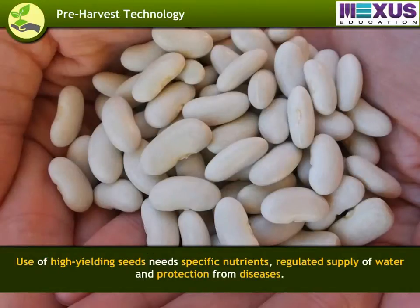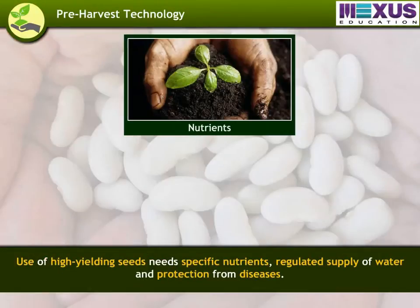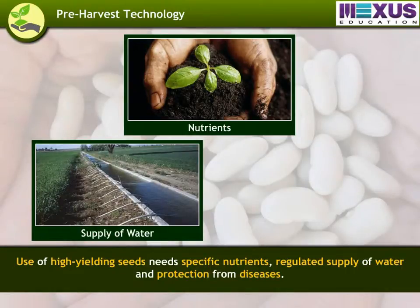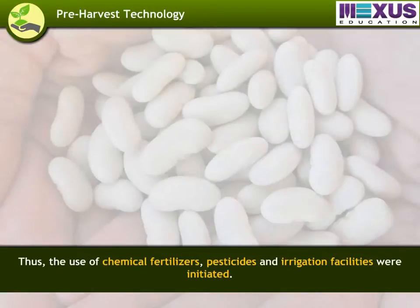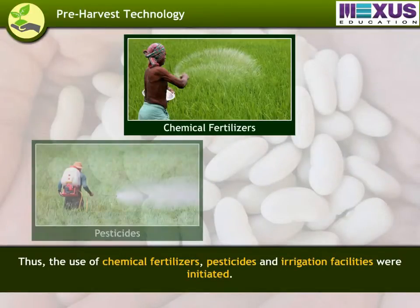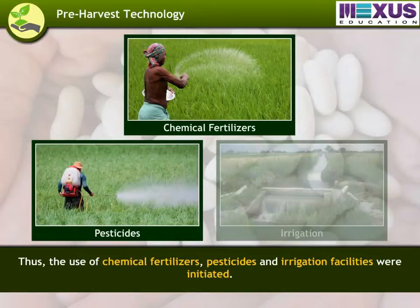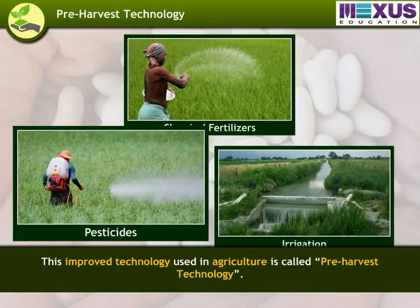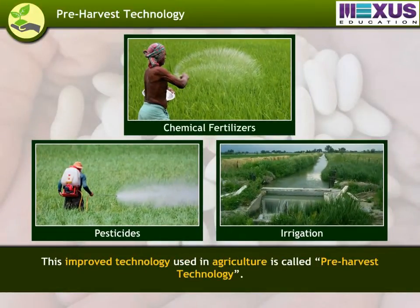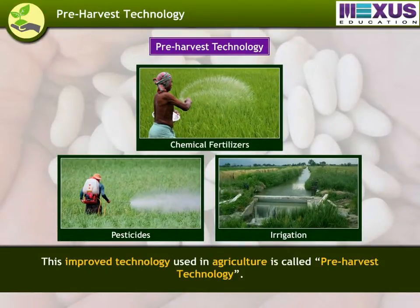Use of high-yielding seeds requires specific nutrients, a regulated supply of water, and protection from diseases. Thus, the use of chemical fertilizers, pesticides, and irrigation facilities were initiated. This improved technology used in agriculture is called pre-harvest technology.